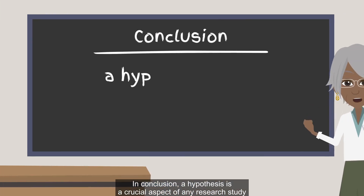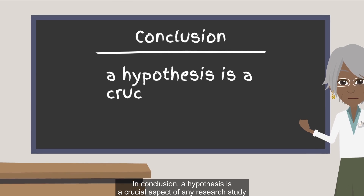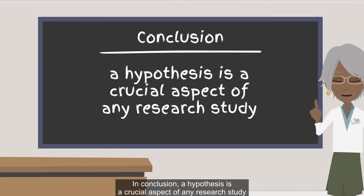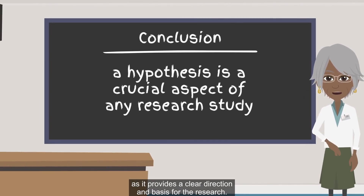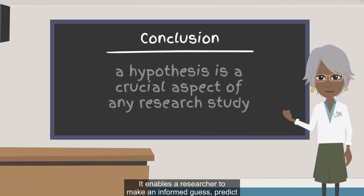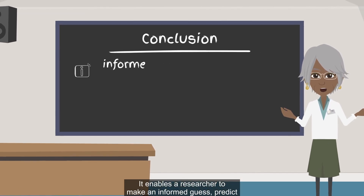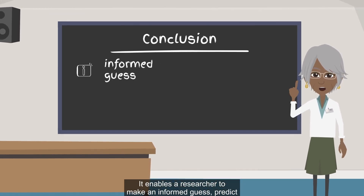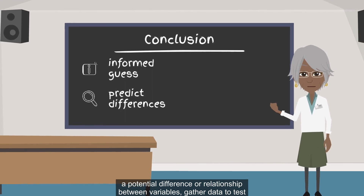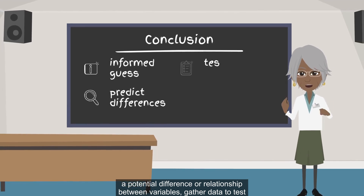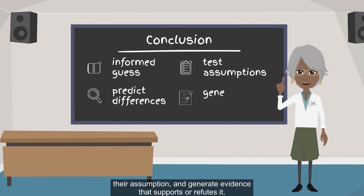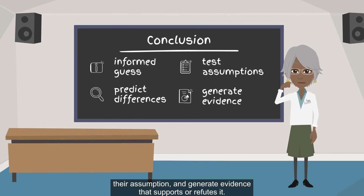In conclusion, a hypothesis is a crucial aspect of any research study as it provides a clear direction and basis for the research. It enables a researcher to make an informed guess, predict a potential difference or relationship between variables, gather data to test their assumption, and generate evidence that supports or refutes it.